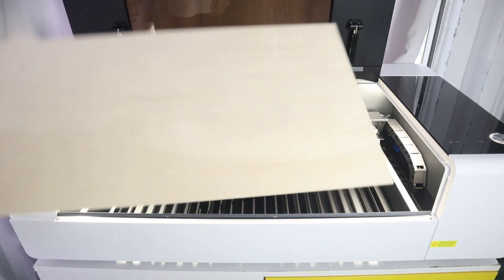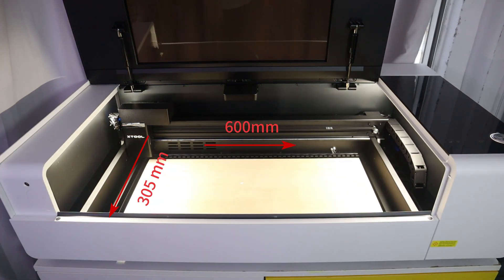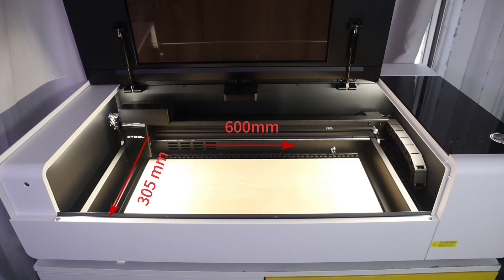X2P2 is a superb and very powerful carbon dioxide laser cutter with its working area of 600 mm by 305 mm.